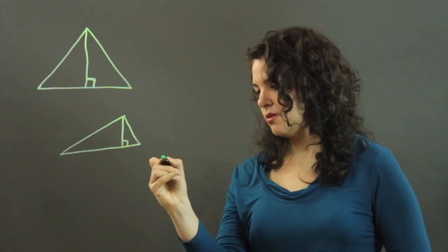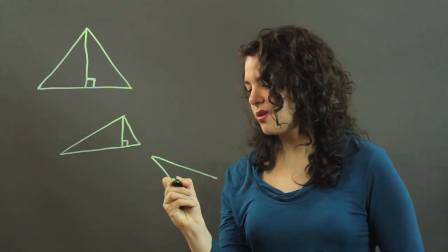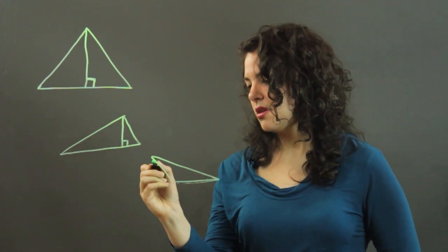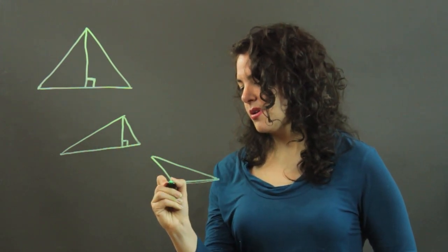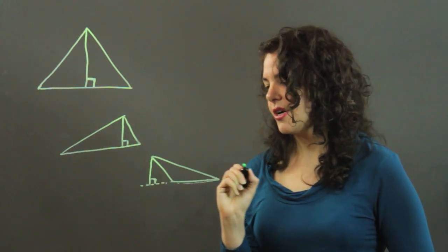Or sometimes the height doesn't show up within a triangle. Like if this is my base, then the line perpendicular extends out to here. And there's your height.